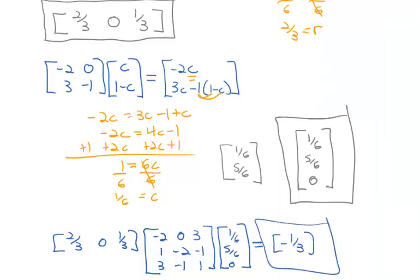This is a loss for the row player. The row player can't win if the column player plays optimally — the row player will lose 1/3 of a unit every game on average in the long run. So that's how reduction by dominance works: look for a row you would never play because it's always smaller, look for a column you would never play because it's always bigger, and eliminate those until you're down to a two-by-two matrix, which is then easy to solve.